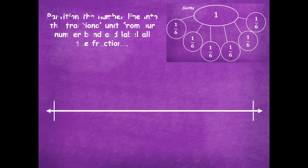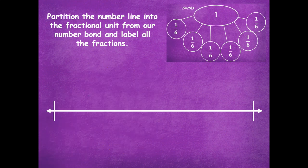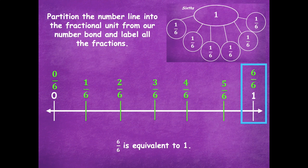Again, you're going to model this on your number line. Partition the number line into our fractional unit from our number bond, label all the parts, and draw a box around the fraction that represents one. Pause the video, do that, and click play when you're ready. All right — zero and one are our starting and end points. We're going to split into sixths, so we would have five lines. Then we label: zero sixths, one sixth, two sixths, three sixths, four sixths, five sixths, and six sixths. Six sixths is equivalent to one.